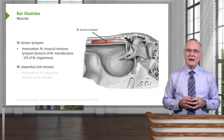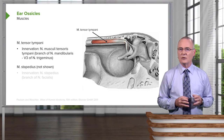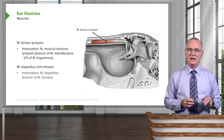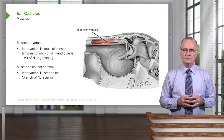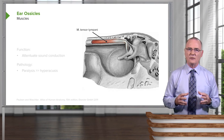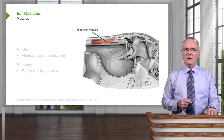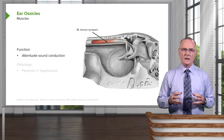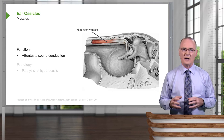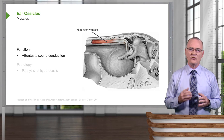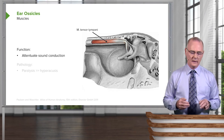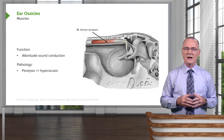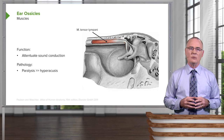The stapedius is another muscle within the middle ear; it attaches to the stapes and is not shown in this illustration. It is innervated by a small branch of the facial nerve. Though these muscles are very small in size, when they contract they reduce the oscillations between the ear ossicles, thereby attenuating sound wave conduction through the middle ear. If one or more are paralyzed, the individual has an increased sensitivity to sound, which is termed hyperacusis.